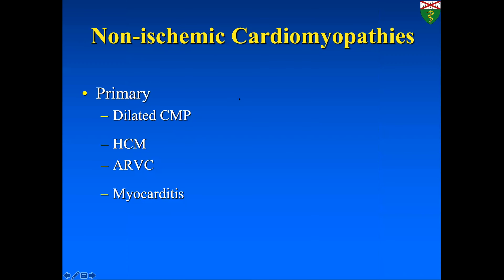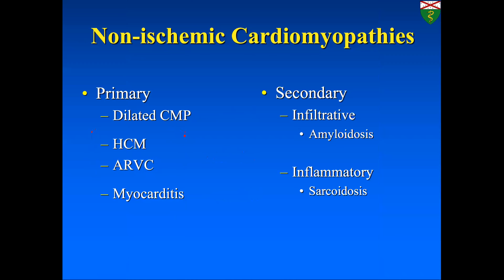We'll follow the American Heart Association classification and focus on the primary cardiomyopathies: dilated cardiomyopathy, hypertrophic cardiomyopathy, arrhythmogenic right ventricular cardiomyopathy (ARVC), and myocarditis. Dilated is a mixed type, HCM and ARVC are genetic, and myocarditis is an acquired primary. Secondary cardiomyopathies we'll cover include amyloidosis, which is infiltrative, and sarcoidosis, which is inflammatory.